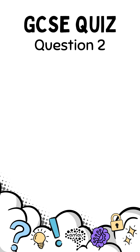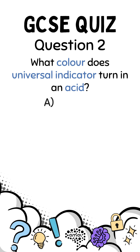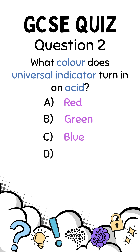Question 2: What colour does universal indicator turn in an acid? A. Red, B. Green, C. Blue, D. Purple.